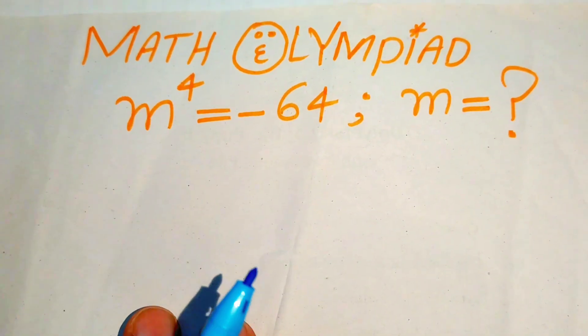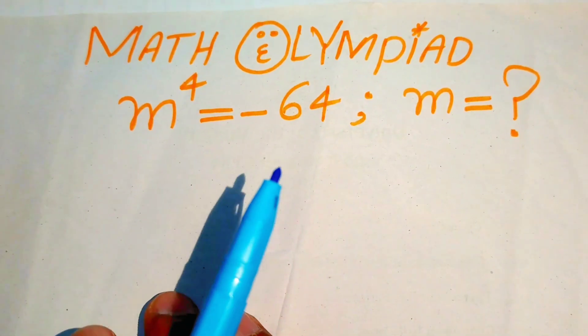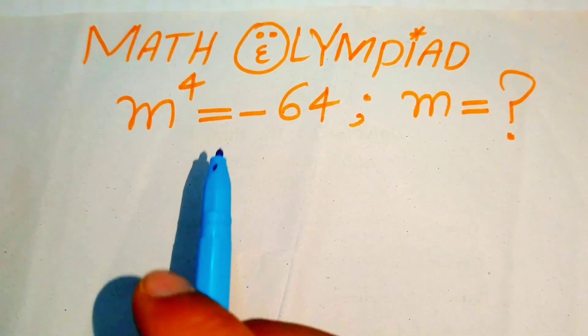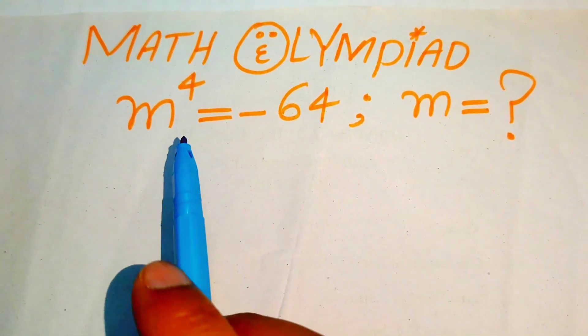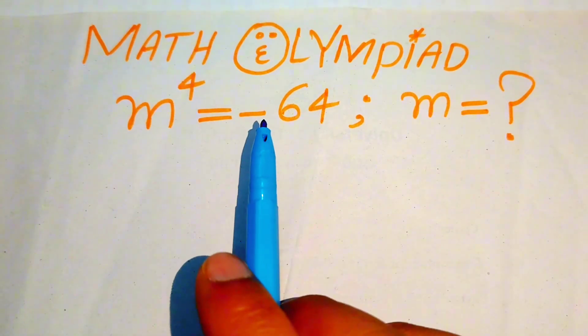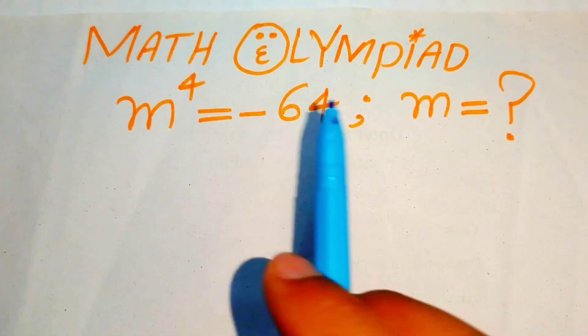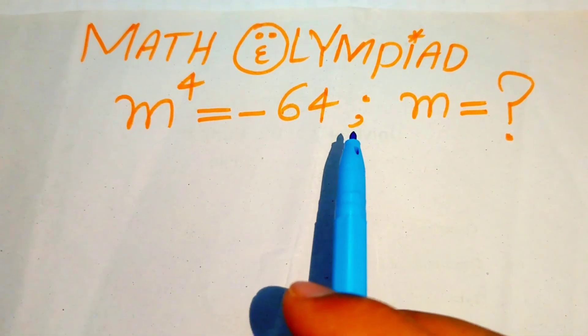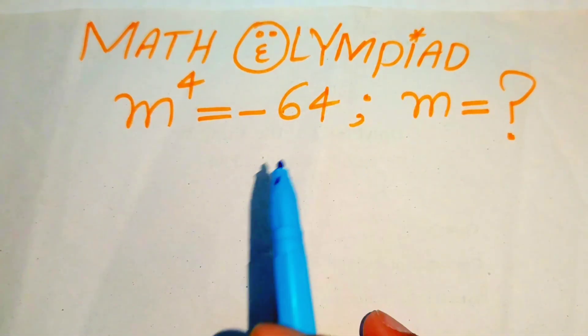Hello everyone, welcome. Let's solve this nice algebra problem: m to the power of 4 equals minus 64, and we will solve this problem for the values of m.